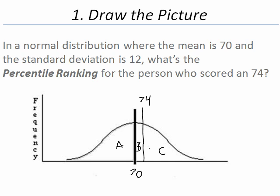We are interested in the percentage of people who scored below 74. We know that half the population is below the mean, just like half the population is above the mean. The mean divides it in half.